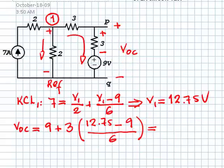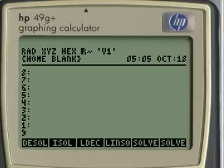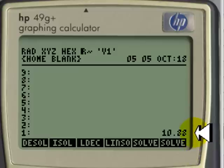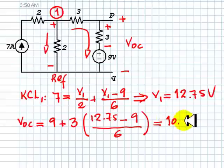That has to be the voltage VOC. Let's compute that 9, enter, 3, enter, 12, 75, enter, 9, enter, subtract, 6, divide, multiply, sum. So, that voltage is 10.88 volts, this voltage is 10.88 volts, the open circuit voltage.